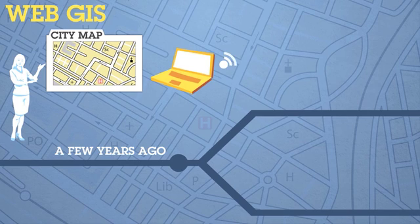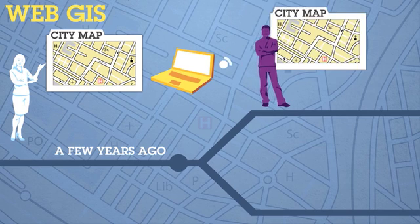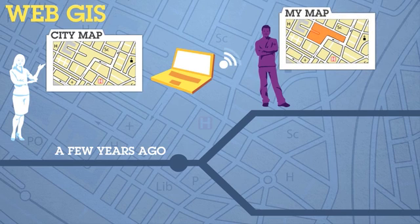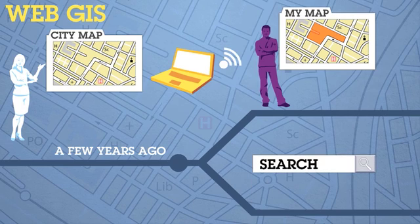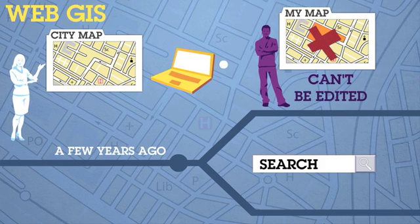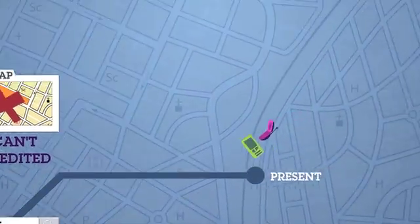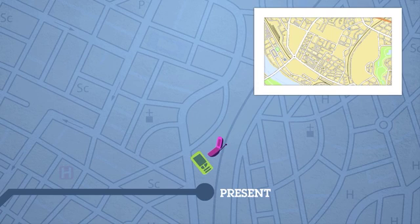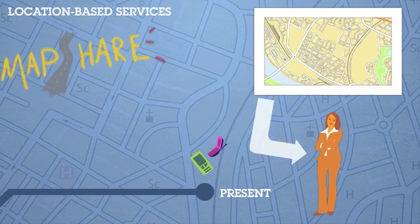Web GIS allowed government executives to enable citizens to create their own maps, view location-based data in real time, and enjoy interactive features such as querying and searching. However, maps could not be edited by the general public, limiting the potential of citizen participation.